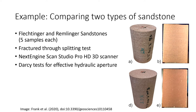To show an example of how to use EPSA, here we have two samples: two sandstones — Flechtinger and Remlinger sandstone. Both are quarried in Germany, with Flechtinger having a bit larger grain size and being more heterogeneous, and Remlinger having finer grains and being more homogeneous. Both samples are 10 cm diameter and 15 cm height. They were artificially fractured through splitting tests. The resulting surfaces were scanned with the NextEngine ScanStudio Pro at the highest resolution possible, and we also reassembled both fracture halves to conduct Darcy tests to get an idea of the effective hydraulic aperture. We have five samples of each rock type.